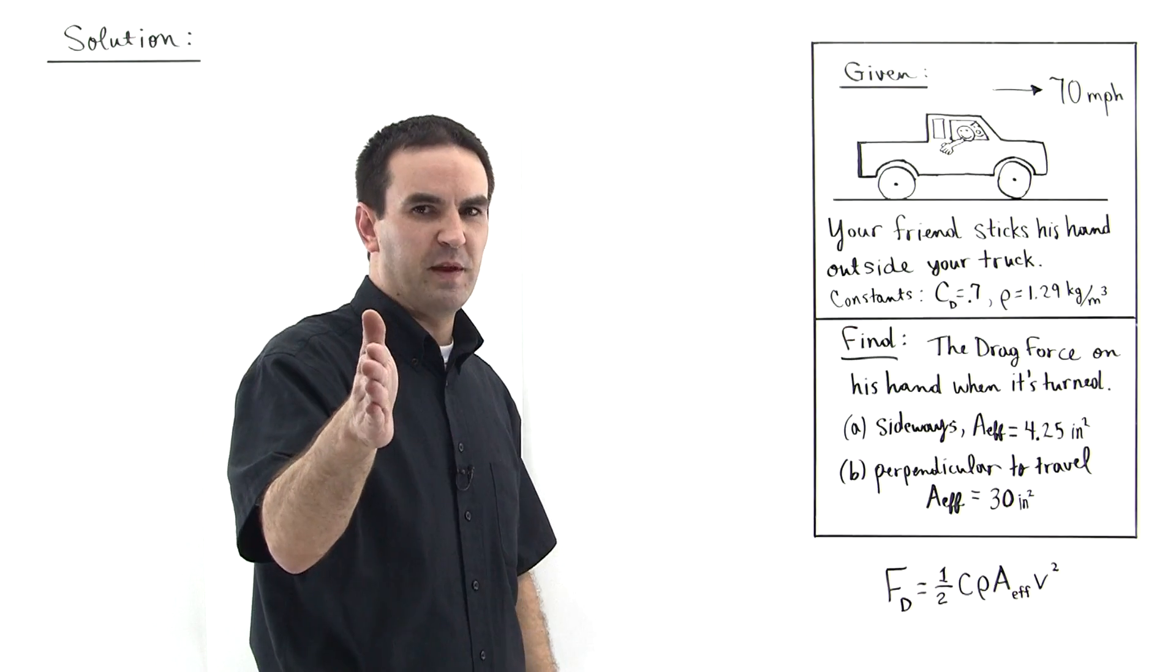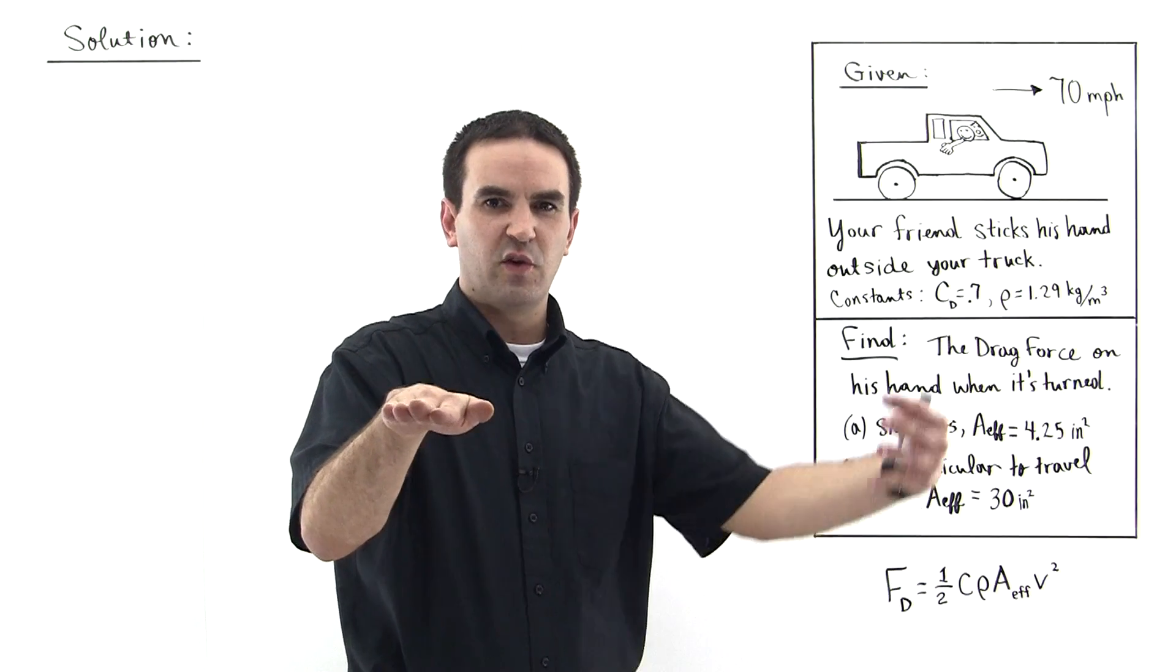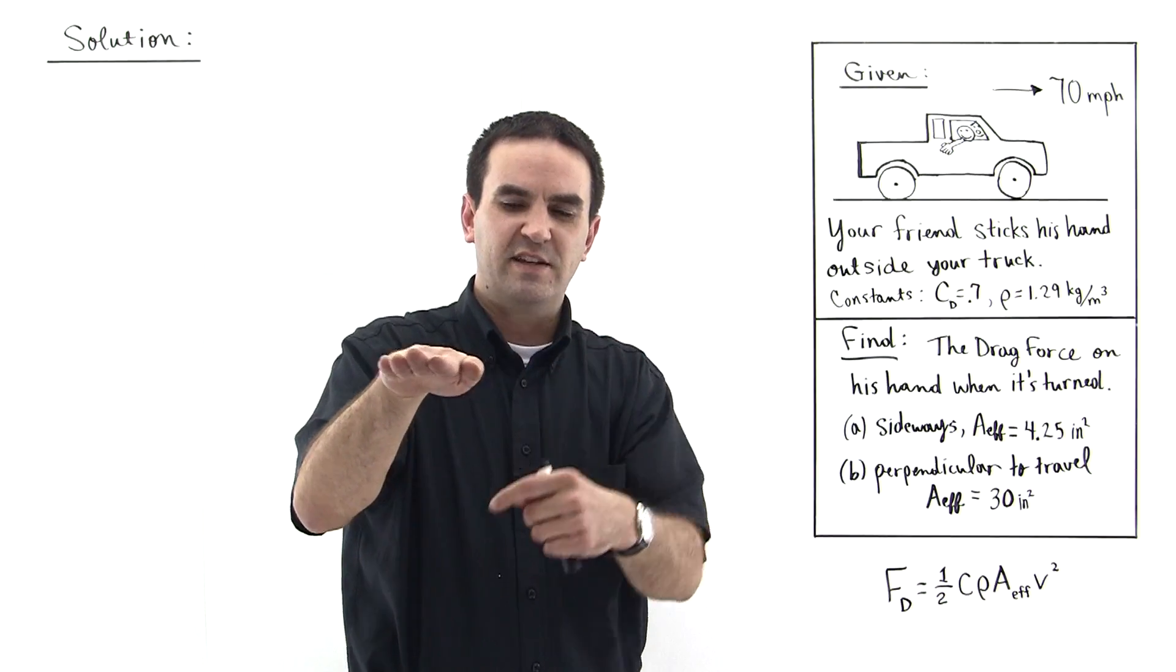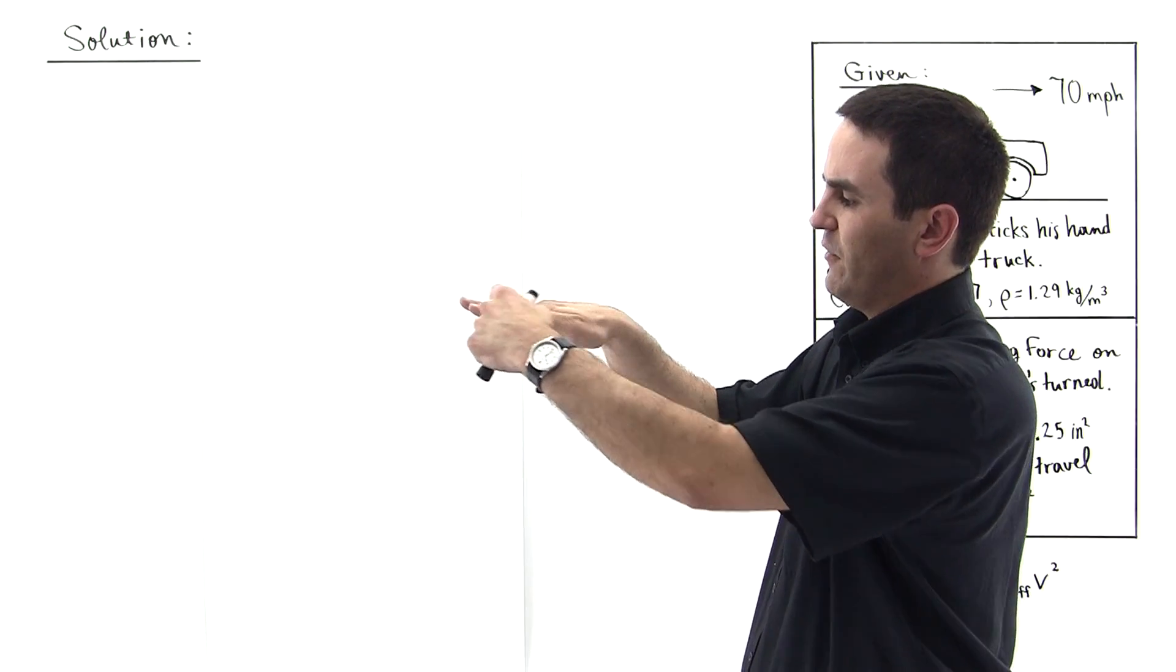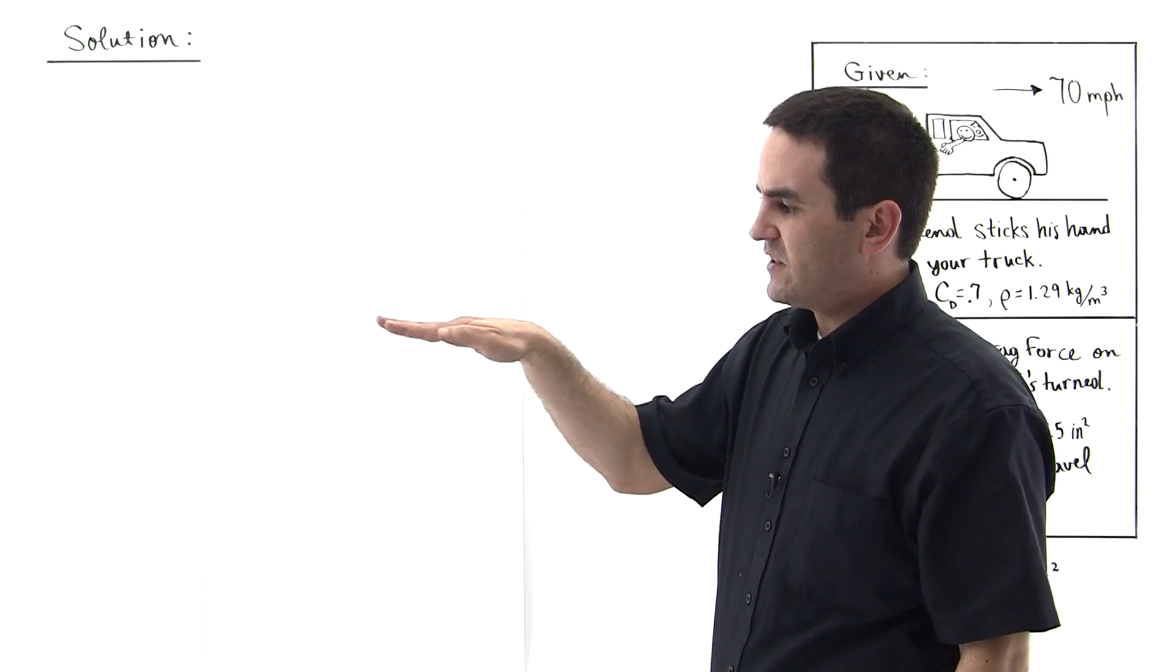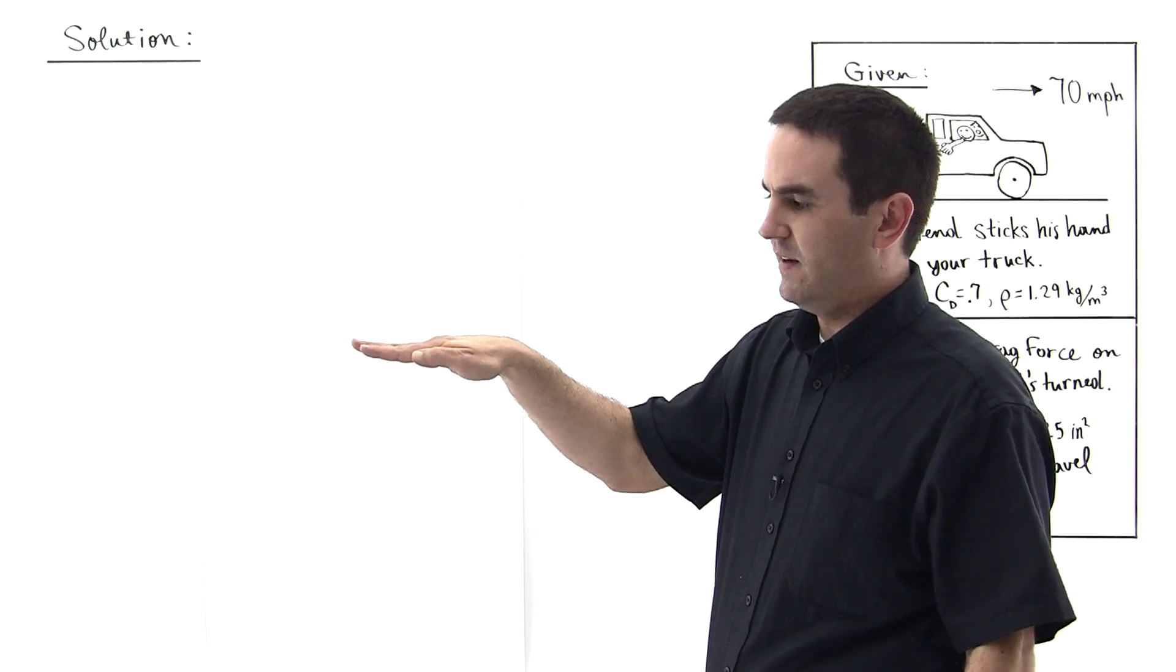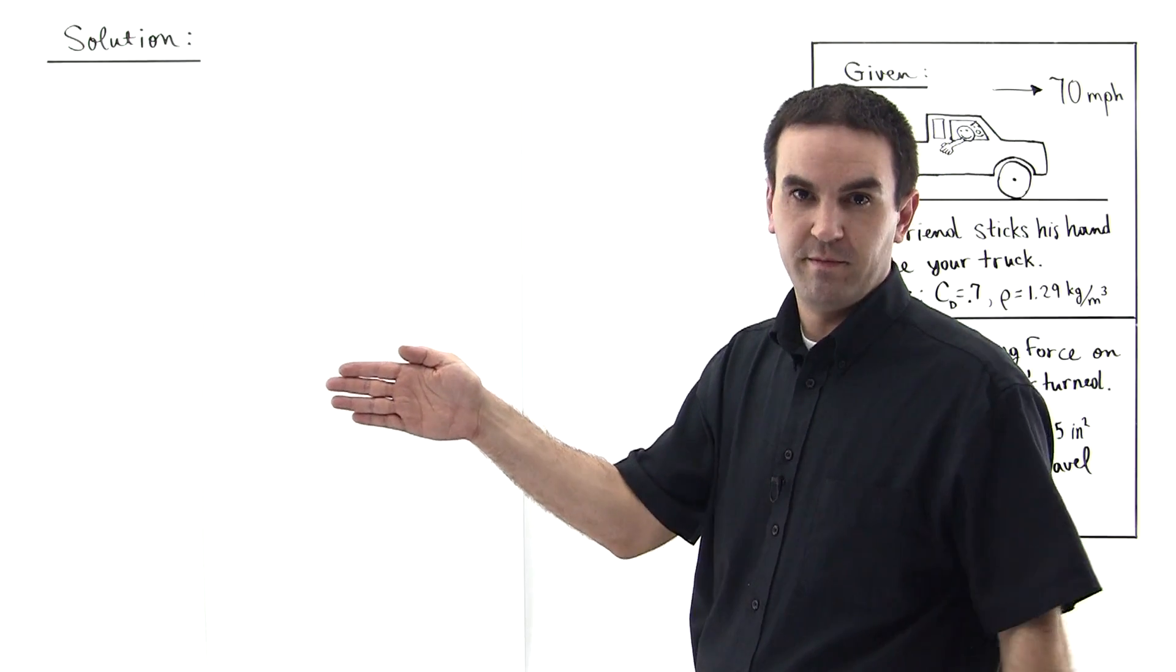and then in part B when it's perpendicular like this. So we know that whenever his hand is turned like this, there's going to be fewer air molecules exchanging momentum with his hand. And so the cross-sectional area that is of concern is this area right here, the area that is exchanging momentum. So whenever it's like this, it's exchanging less momentum because there's fewer molecules hitting it. Then when it's like this, there's more molecules exchanging more momentum with it.